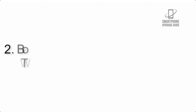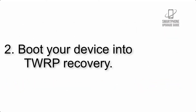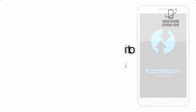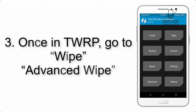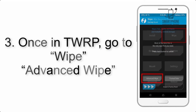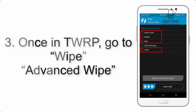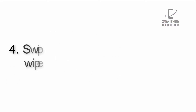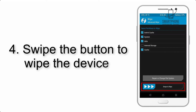Step 2: Boot your device into TWRP recovery. Once in TWRP, click on Advanced Wipe and select the checkboxes as shown in the image, excluding internal storage.